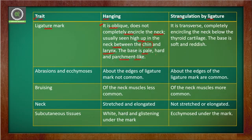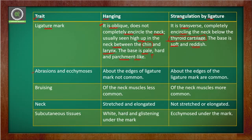Moving to strangulation by ligature: the ligature mark is transverse and completely encircles the neck below the thyroid cartilage — this is very important. There is a complete encirclement which is transverse, and the base is soft and reddish. In hanging the base was hard, pale, and parchment-like, but in ligature strangulation it is soft and reddish.